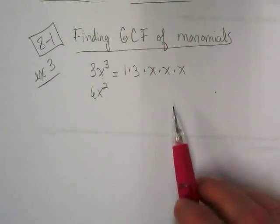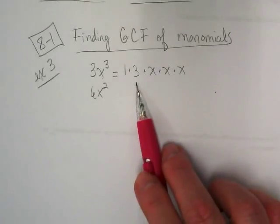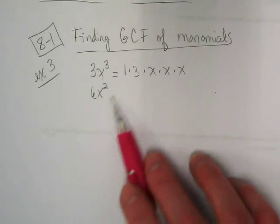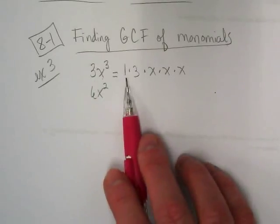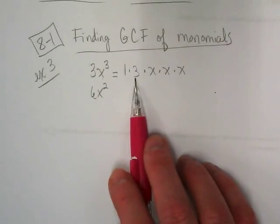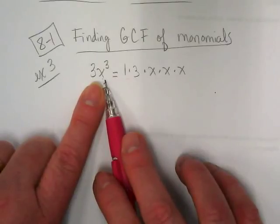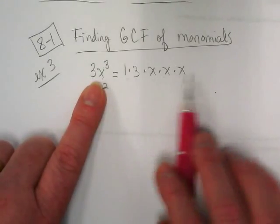But we're doing our first example of trying to factor out monomials, and then we're going to find what they have in common. We've already factored out the 3, and we looked at separating out the constant, and then we took apart the exponent. Because it's x to the third power, we have three of them.